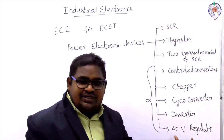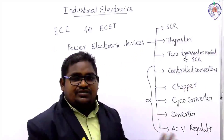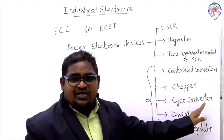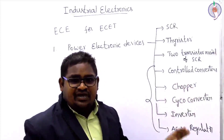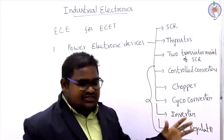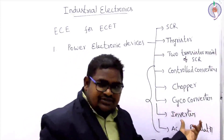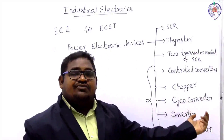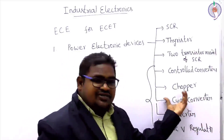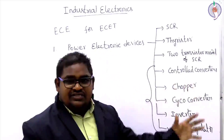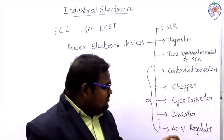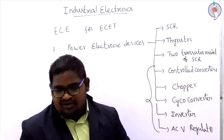Some important points: what is chopper, what are the various types of chopper, and how it will be operated, and what are the various points to be remembered. From the chopper, next, what is cycloconverter, what are the various types of cycloconverter, and what are the important points to be remembered regarding the cycloconverter for the ESET examination. Then similarly for the inverter and the AC voltage regulator.